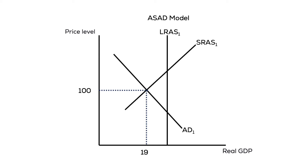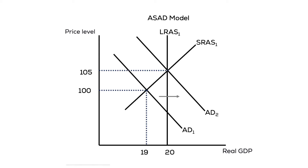The Federal Reserve would purchase securities. This would cause the aggregate demand curve to increase, and the economy would return to equilibrium through increased spending. The question is, why does a purchase of securities increase aggregate demand?